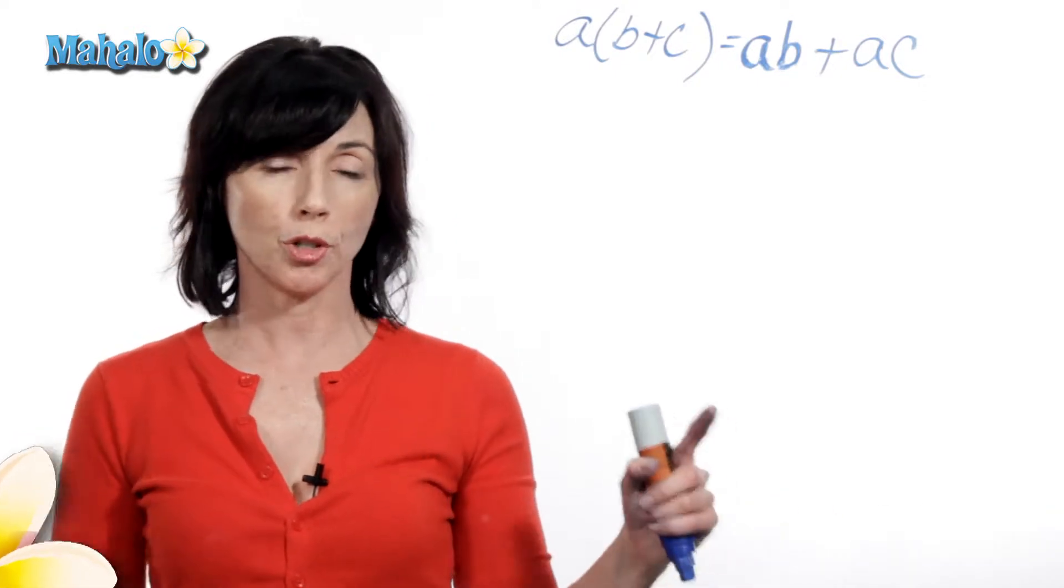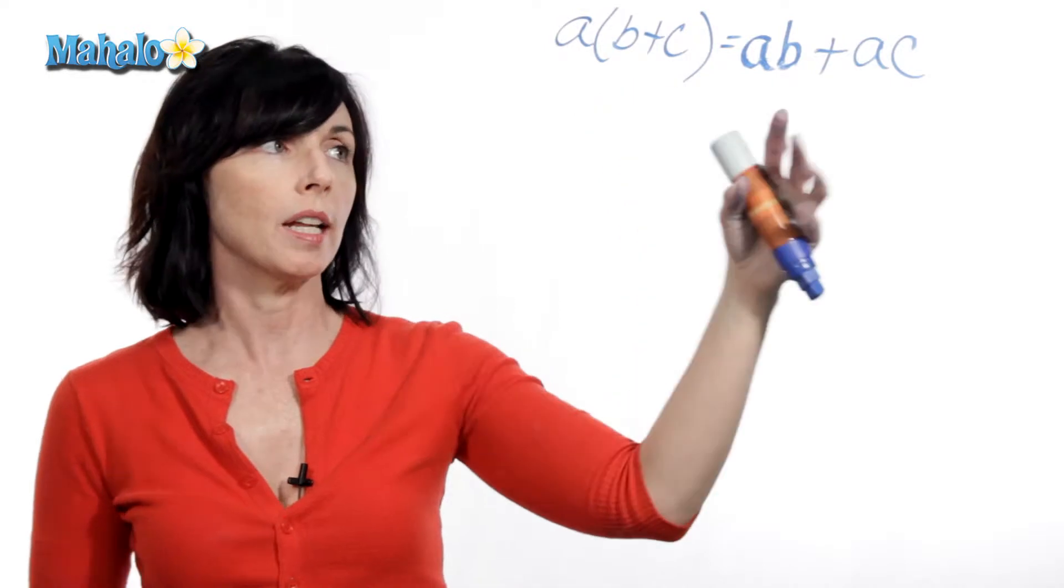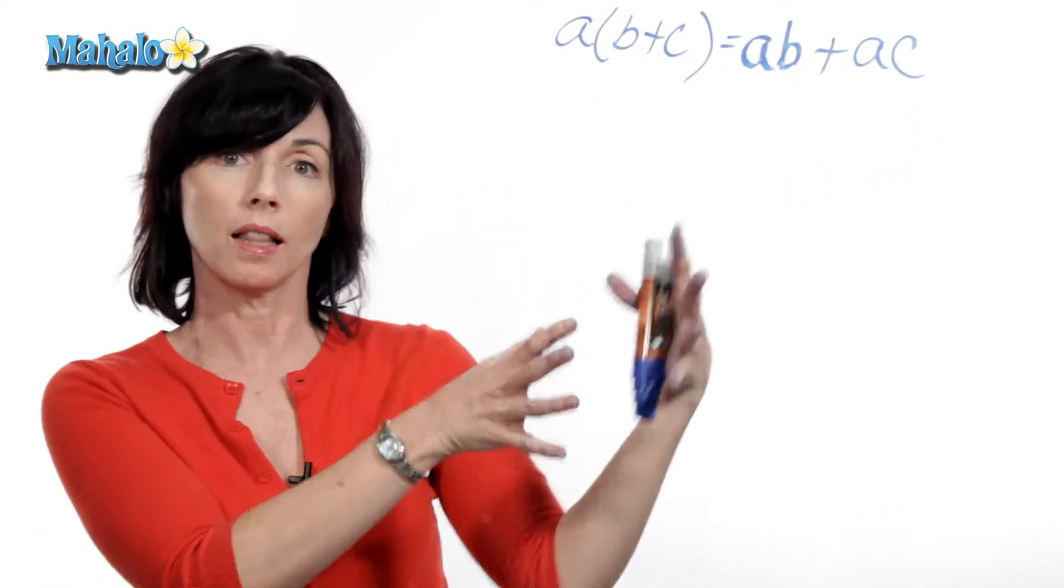Now, you can use the distributive property in this direction, expanding out. But you can also go this direction, taking something that's expanded and collapsing it down.